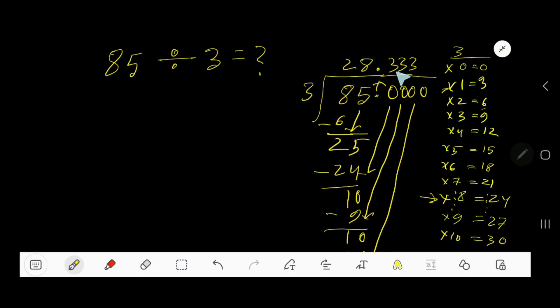Place 3 dot here, so our answer is 28.333 dot dot dot. You can also rewrite the answer placing a bar over 3. Since this 3 is repeating, you can place a bar over 3.